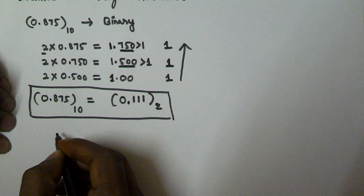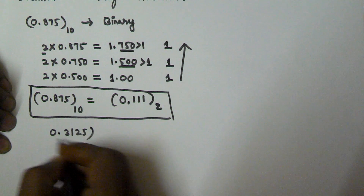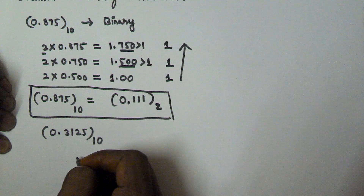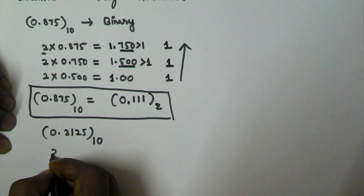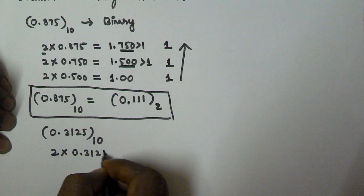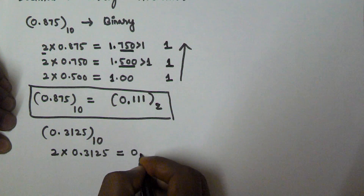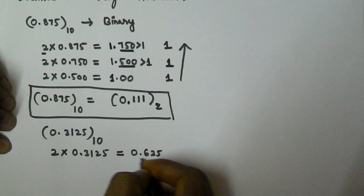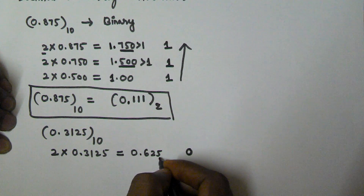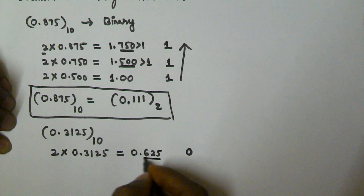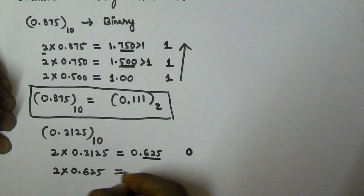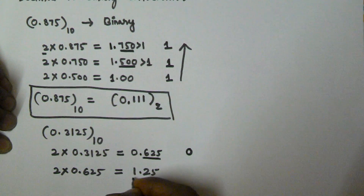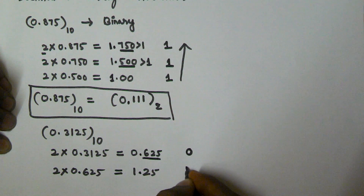Let's take another example: 0.3125 as a decimal value, and we have to convert it into binary. We take the value and multiply by 2. So 0.3125 times 2 equals 0.625. Since this is less than 1, we take 0. Now we multiply 0.625 by 2, which gives 1.250. This is greater than or equal to 1, so we take 1.